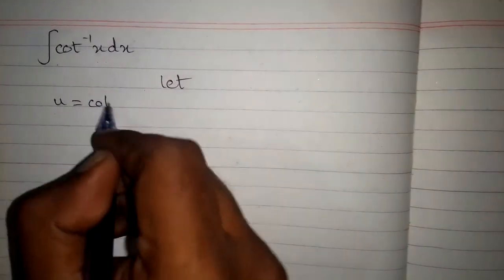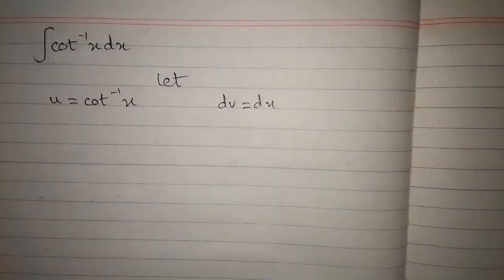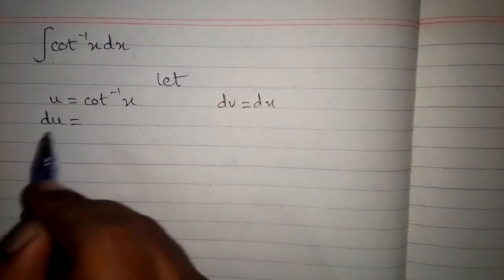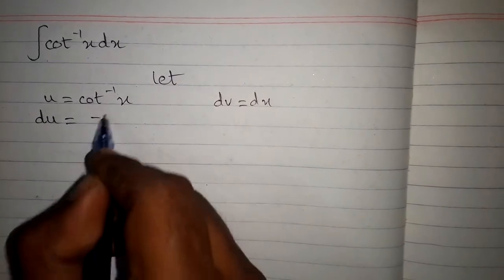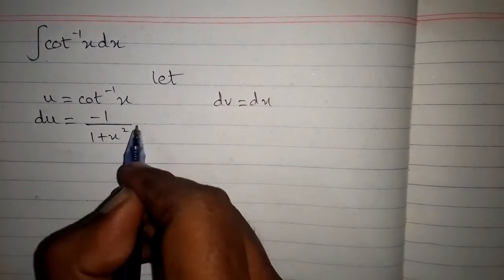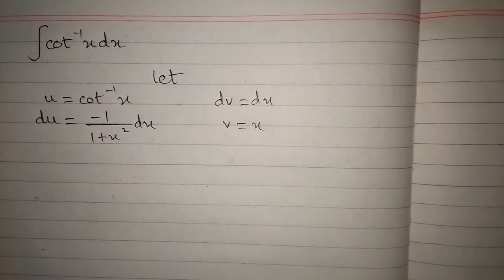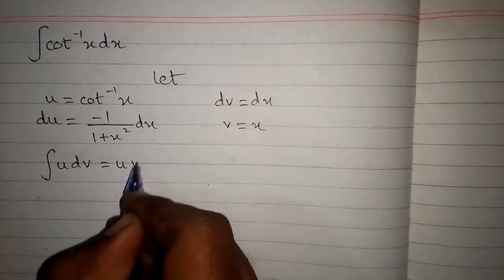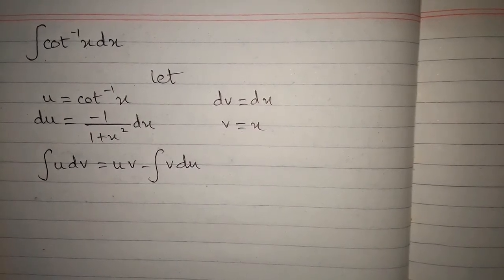We will suppose u is equal to cot inverse x and dv is equal to dx. We then take the derivative of u, so the differential du equals minus 1 upon 1 plus x squared dx. Taking the integral of dv, we get v is equal to x. The formula for integration by parts is: integral of u dv equals uv minus integral of v du.